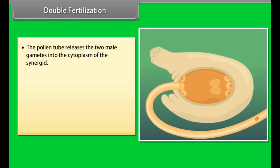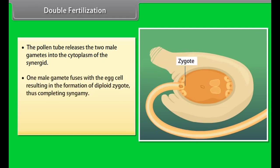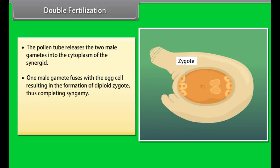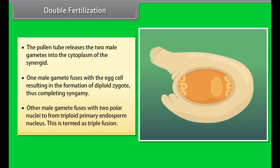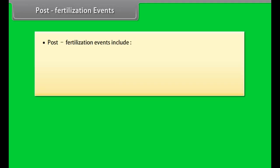Double fertilization: the pollen tube releases two male gametes into the cytoplasm of the synergids. One male gamete fuses with the egg cell, resulting in the formation of a diploid zygote, thus completing syngamy. The other male gamete fuses with the two polar nuclei to form a triploid primary endosperm nucleus — this is termed triple fusion.